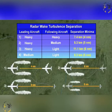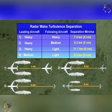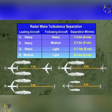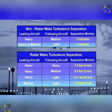Under radar separation, the following distances apply: for a heavy aircraft behind a heavy aircraft, the separation is to be 4 nautical miles; for a medium aircraft behind a heavy aircraft, the separation is to be 5 nautical miles; for a light aircraft behind a heavy aircraft, the separation is to be 6 nautical miles; and for a light aircraft behind a medium aircraft, the separation is to be 5 nautical miles. Here are the tables of the radar and non-radar separation information to help your understanding.